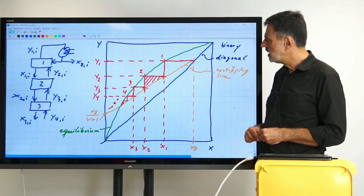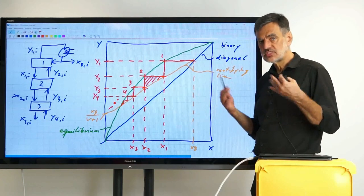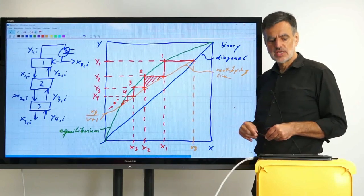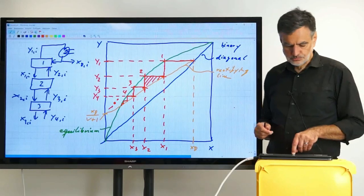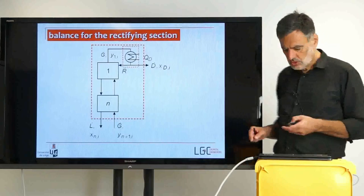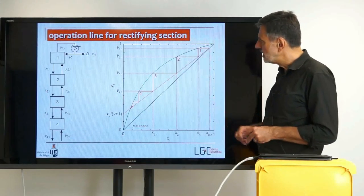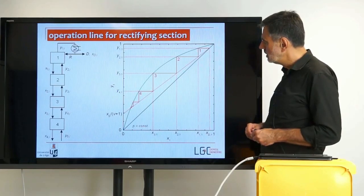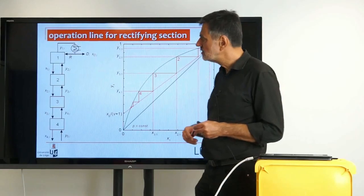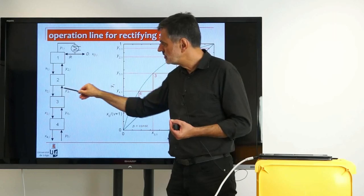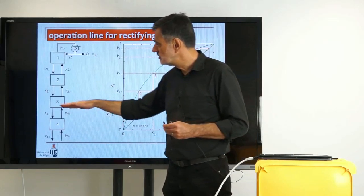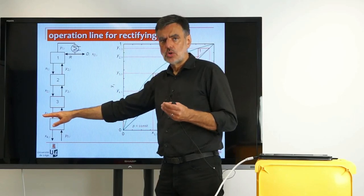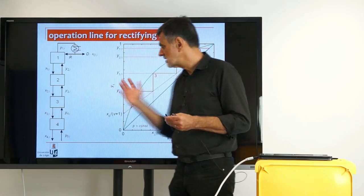So with that, I have shown you that one can depict the stepwise or stagewise progress in distillation with a step construction in the Y-X diagram, and shown how one does that. The diagram looks a little bit nicer when plotted properly. The basis for this are really the balances strictly linking the compositions of the flow rates that are meeting between the theoretical stages — all those compositions must lie on the operating line, in this case the rectifying line.